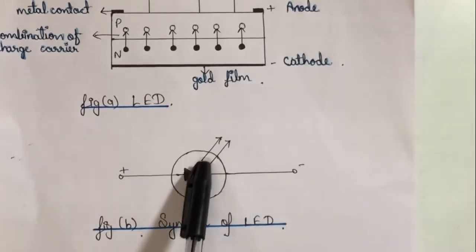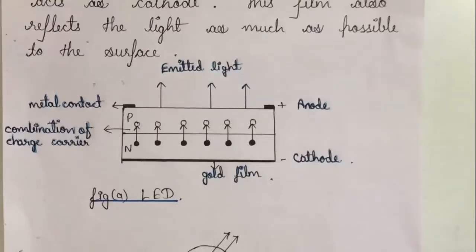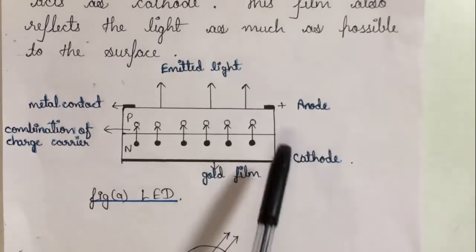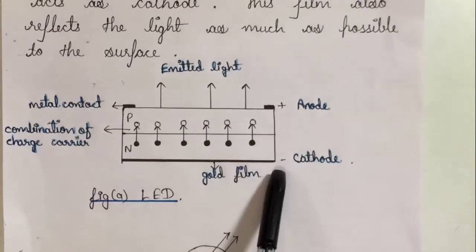The third part of the question is working of LED. The LED works on the same principle as a simple PN junction diode, meaning when the anode is connected to the positive terminal of DC supply and cathode is connected to the negative terminal, then the PN junction is forward biased.